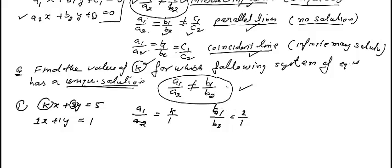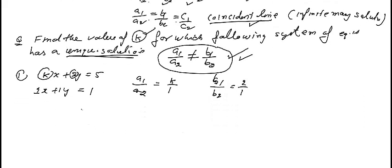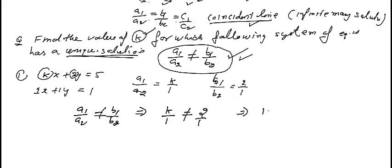It is given that it has a unique solution, meaning A1/A2 is not equal to B1/B2. So K/1 is not equal to 2/1, therefore K can have any value but K should not be equal to 2. This is the answer to this question.